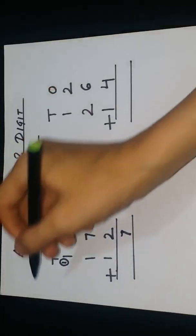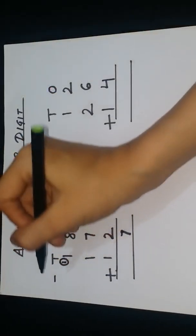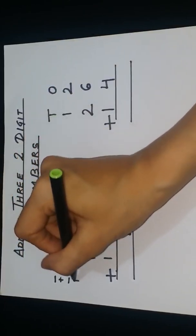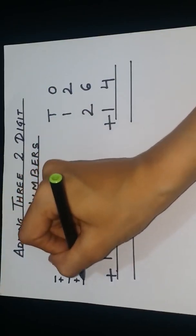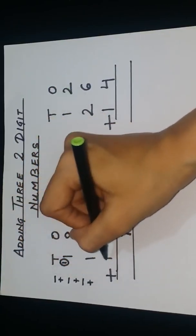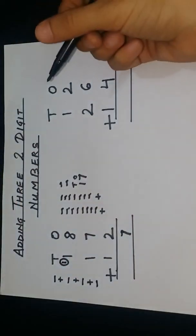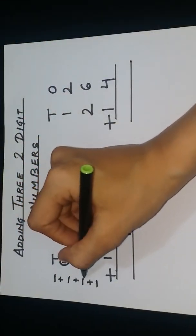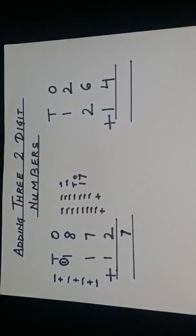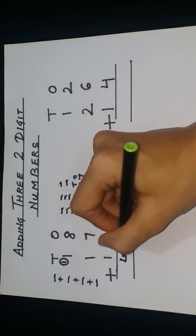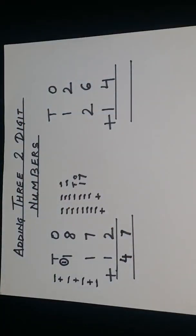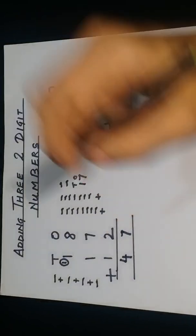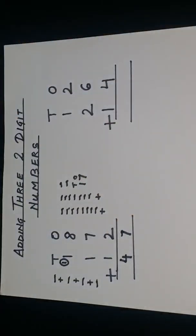You can also draw lines to check. For each 1, draw one line and put a plus sign — doing this for all four digits. Count the total lines: 1, 2, 3, 4. So your answer will be 4. Write 4 here. So your answer is 4 tens and 7 ones, which makes 47.